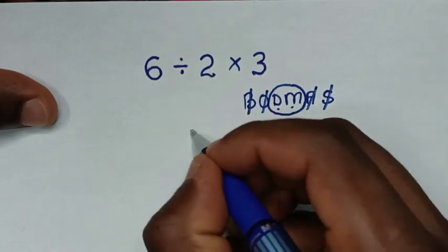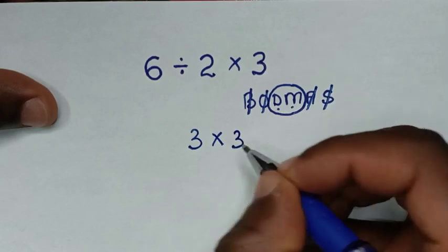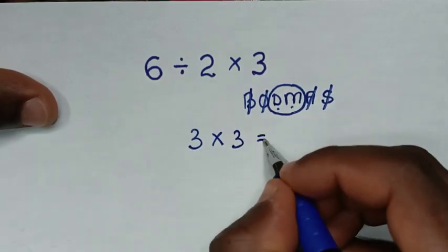6 divided by 2 equals 3, then we multiply by 3. So it becomes 3 times 3, which equals 9.